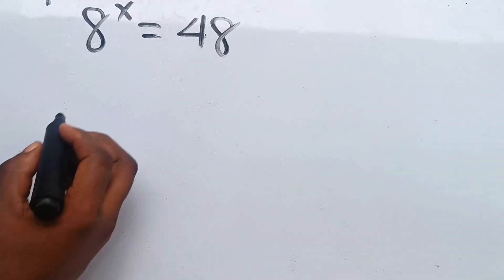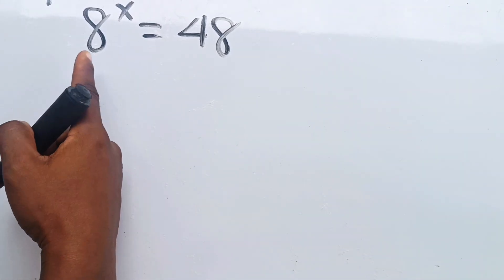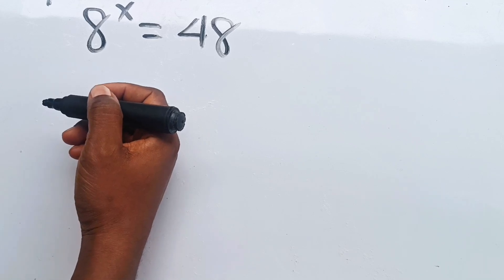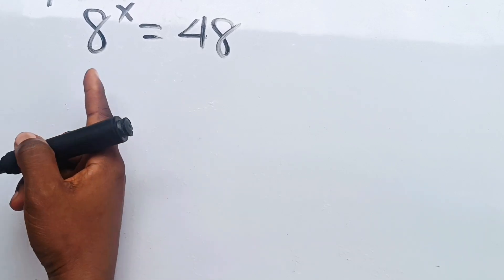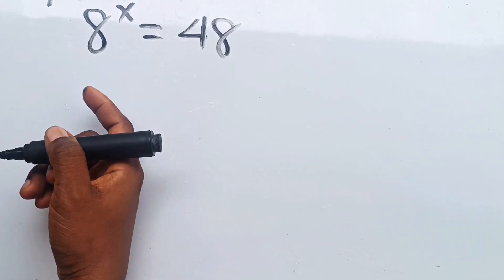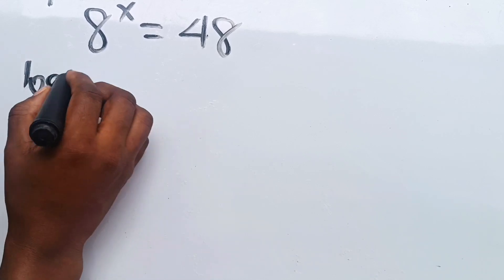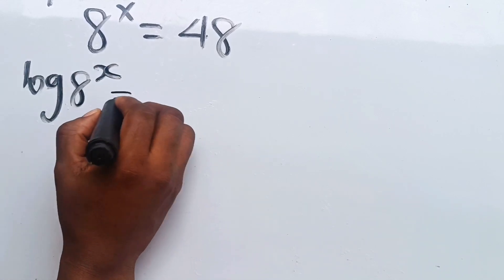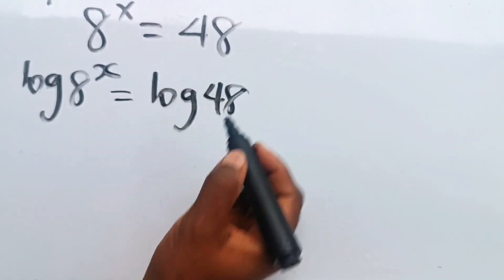Let's solve for x. We are told that 8 to the power of x is equal to 48. The first thing we need to do is know that we can only solve this using logarithms. We are going to introduce log: log 8 to the power of x is equal to log 48.